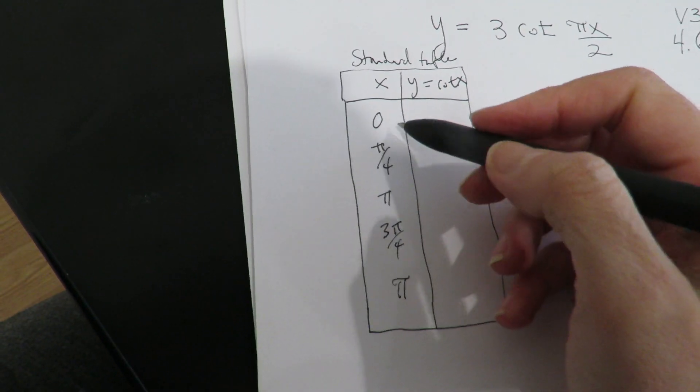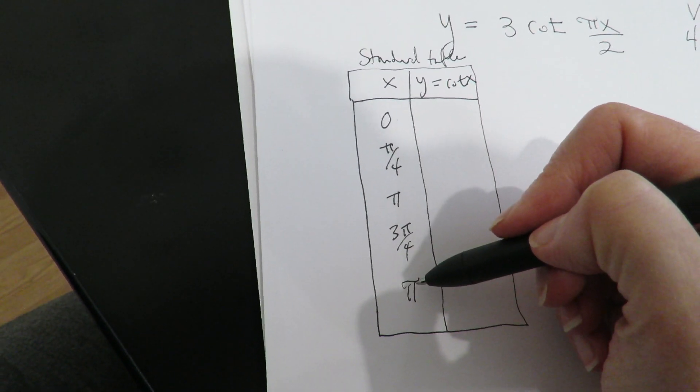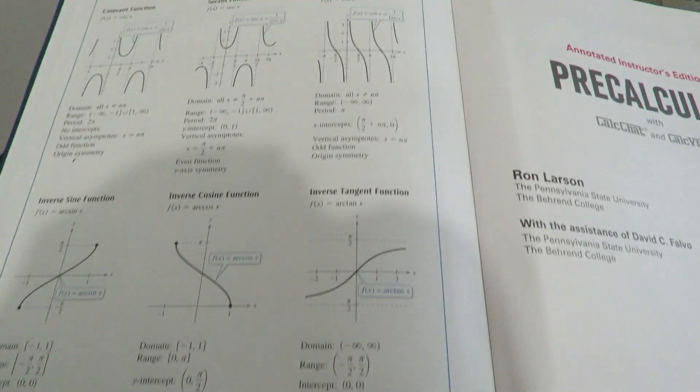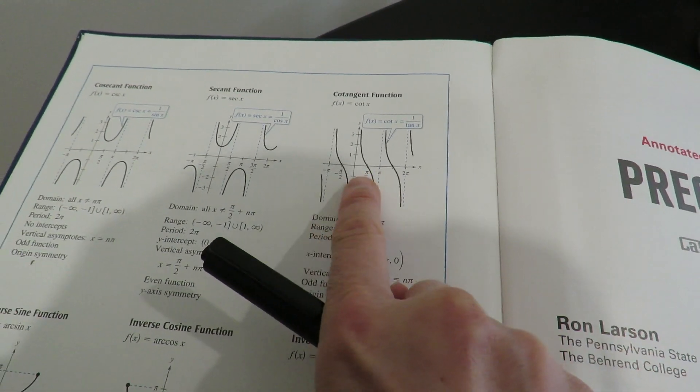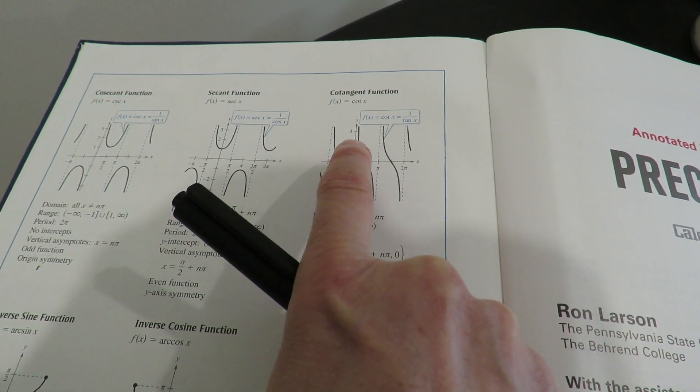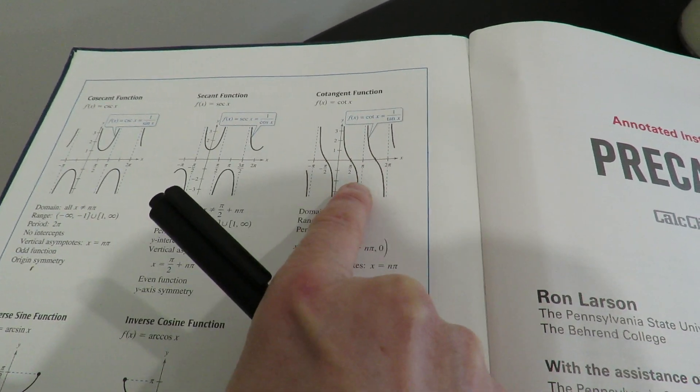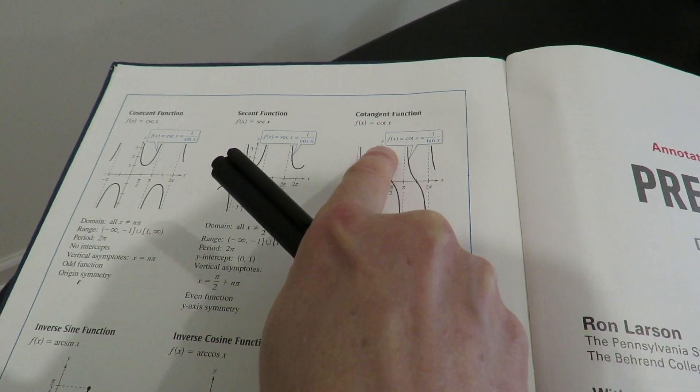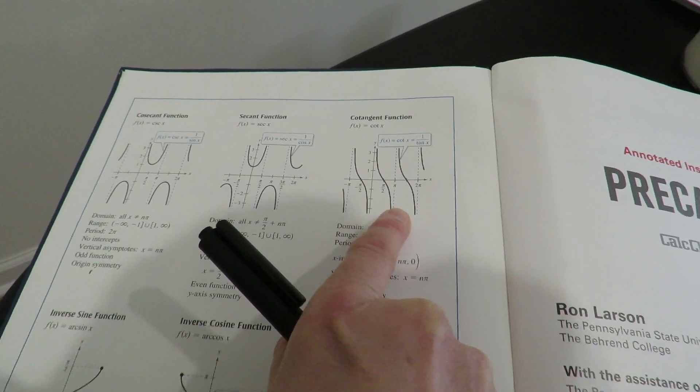Just like the tangent function, the length of this function is also pi. If you notice there's also a difference - it shifted 90 degrees so instead of it being between negative pi over 2 and pi over 2, it actually goes from 0 to pi. And unlike the tangent function, it goes downhill instead of uphill.